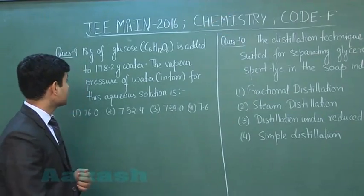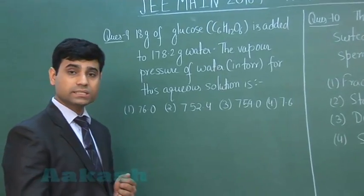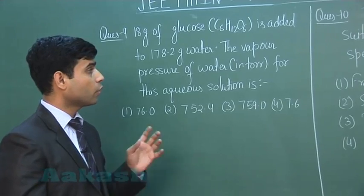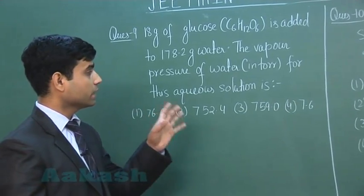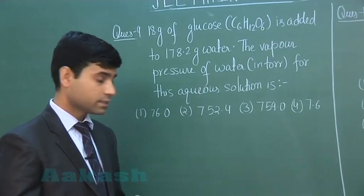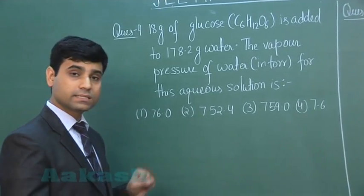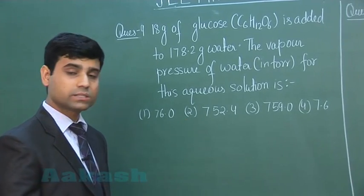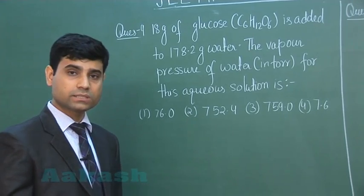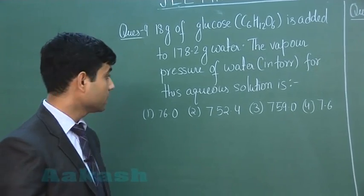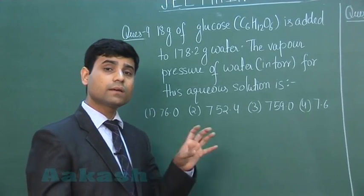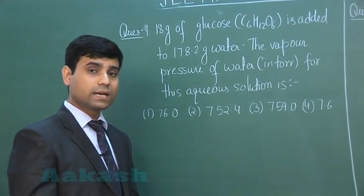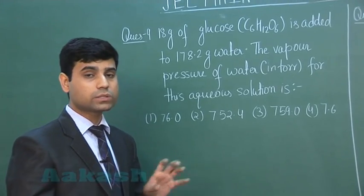The next question: 18 grams of glucose (C₆H₁₂O₆) is added to 178.2 grams of water. The vapor pressure of water in torr for this aqueous solution is — option 1: 76, option 2: 752.4, option 3: 759.0, option 4: 7.6. This question belongs to relative lowering in vapor pressure, and we know relative lowering in vapor pressure equals the mole fraction.